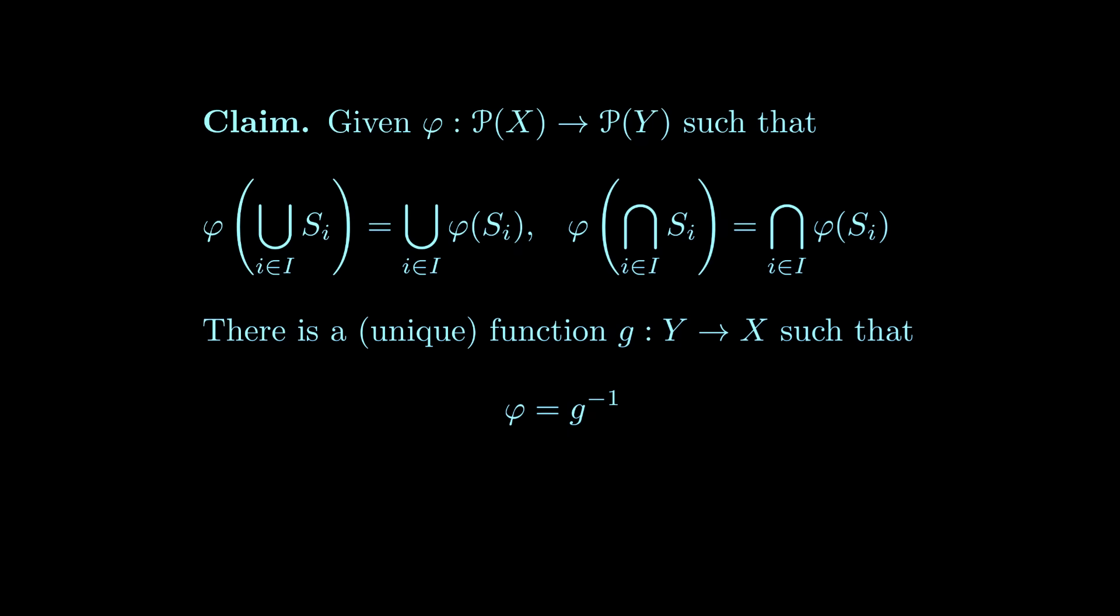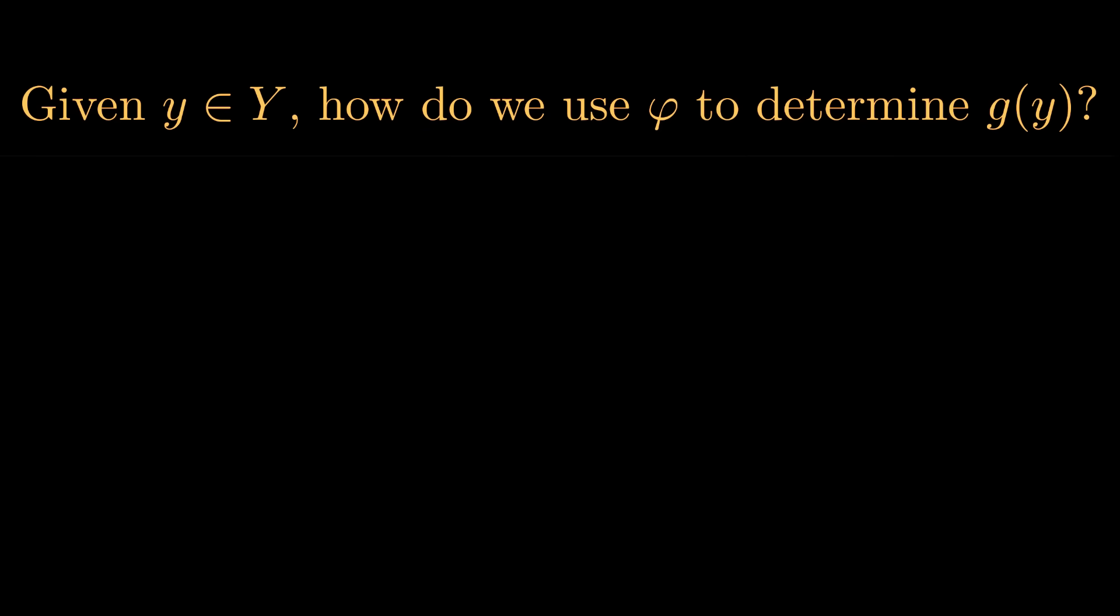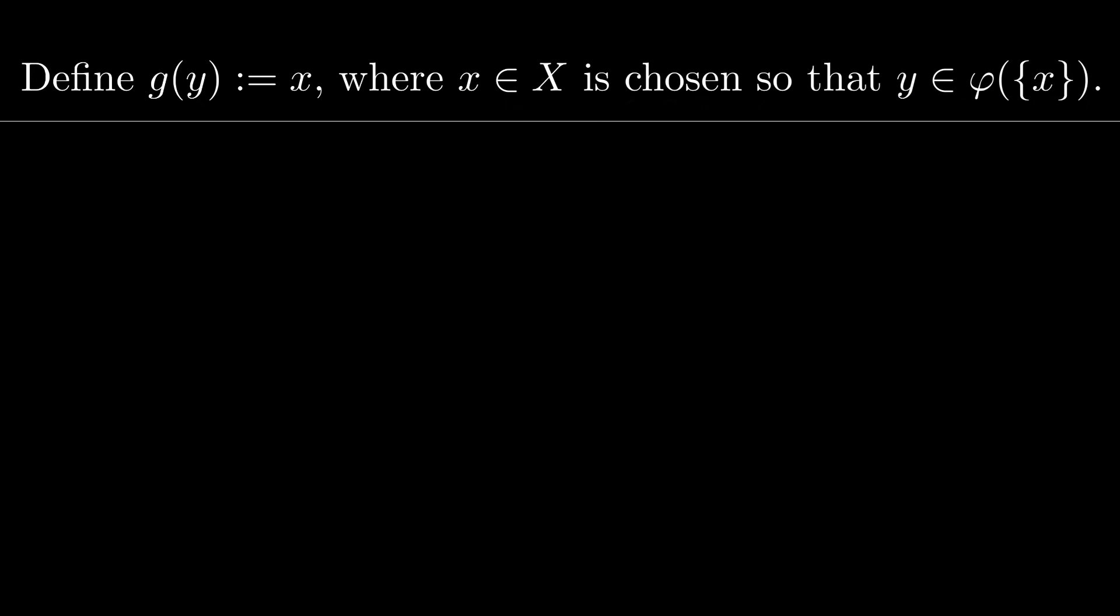How can we reconstruct g from phi? That is, given an element Y, how do we use phi to determine g of Y? Well, g of Y is equal to X if and only if Y is in the preimage of X under g. Therefore, we are led to the following reconstruction. Define g of Y to be X, where X is the element chosen so that Y is an element of phi applied to the singleton set containing X. This is a good prototype, but we have to make sure that this actually makes sense. In other words, we need to verify two things.